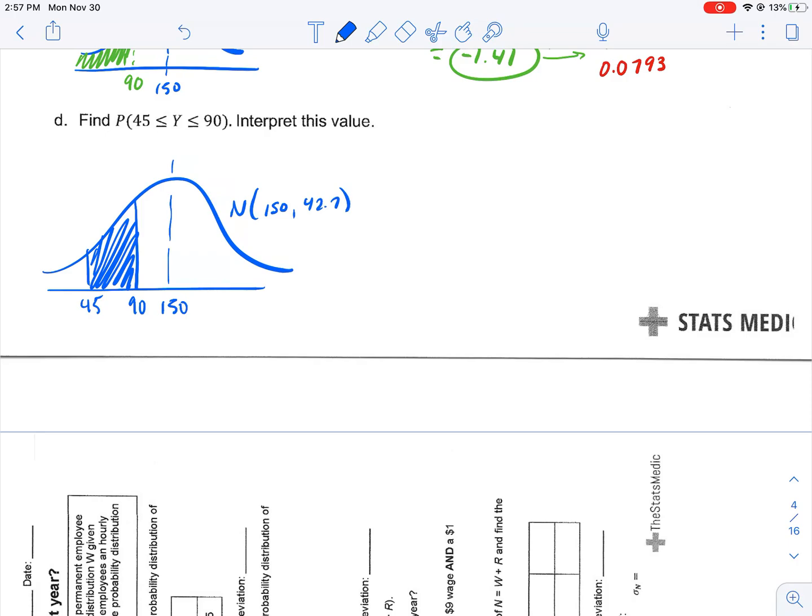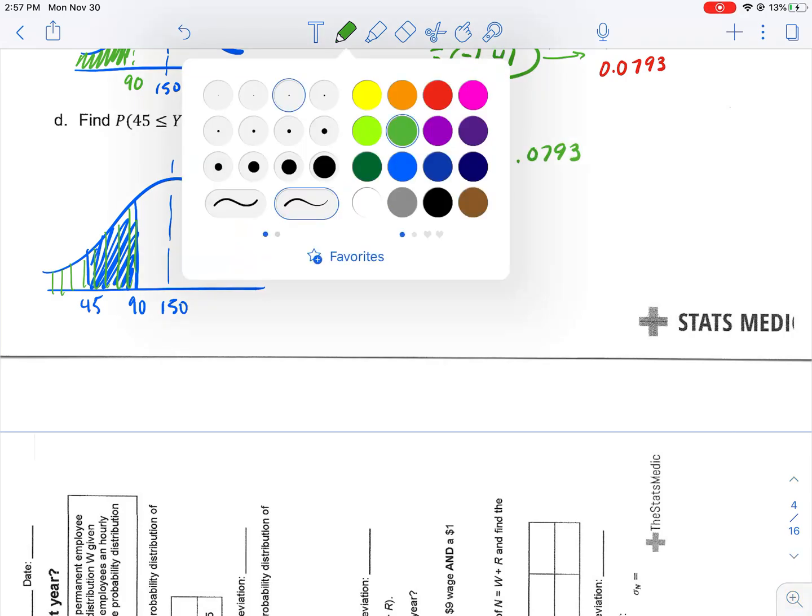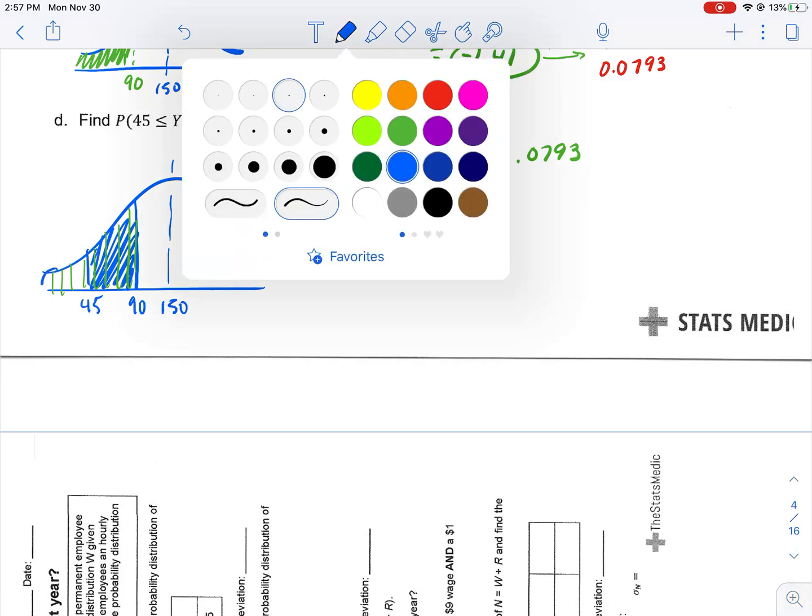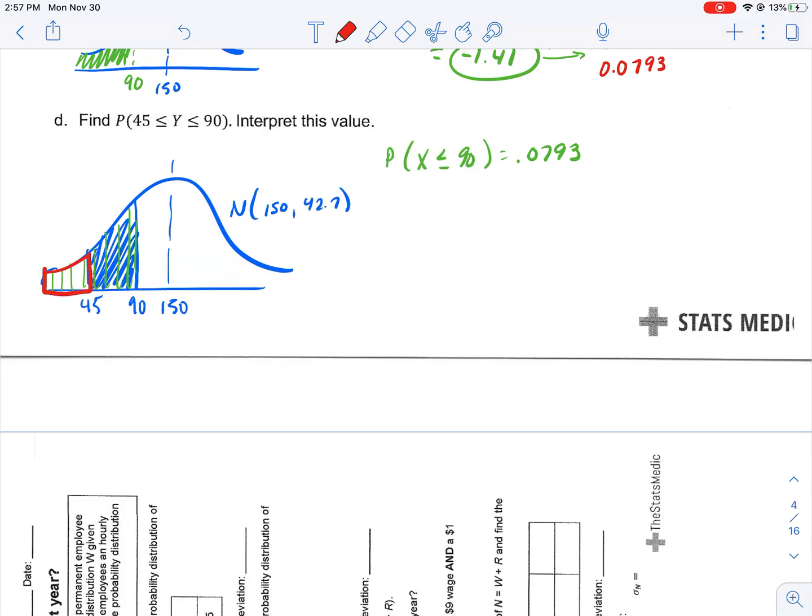And now, remember, my green area, which was my area under 90, the probability that X is less than or equal to 90 was equal to 0.0793. And so, what I really need to do is I need to subtract the red area here. I really need to take the green area and subtract the red area. Well, the red area is the probability that X is less than or equal to 45. So, if I take my full green area and I subtract the red area here, that's going to leave me the blue, which is what I want.